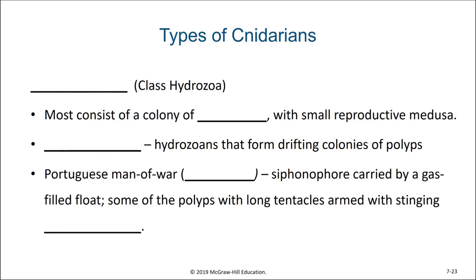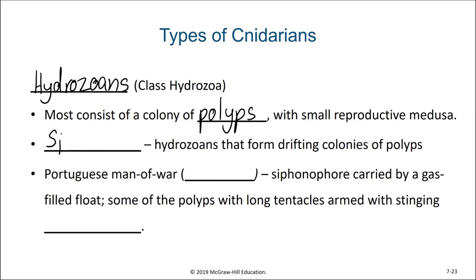The first class of cnidarians we want to talk about are the hydrozoans. They generally consist of a colony of polyps with small reproductive medusa, and include some freshwater cnidarians as well as many marine cnidarians. There's a specific group within the hydrozoans known as the siphonophores. Siphonophores are interesting in that they're a drifting colony of polyps where some are specialized for different tasks. One example of a siphonophore is the Portuguese man-o-war from the genus Physalia.